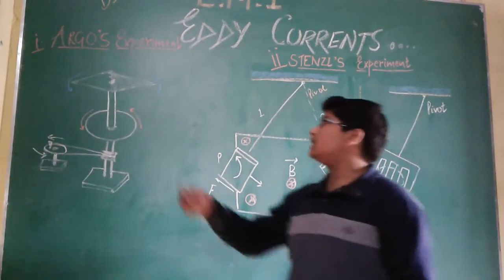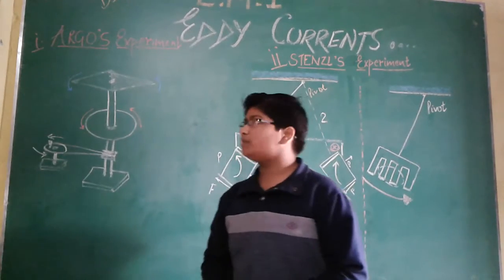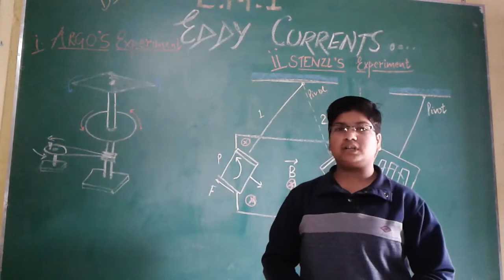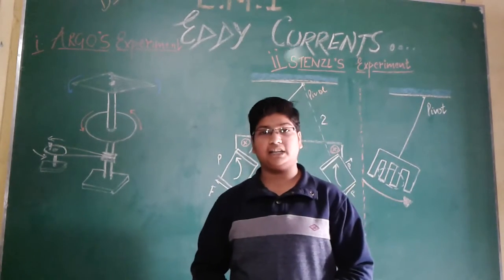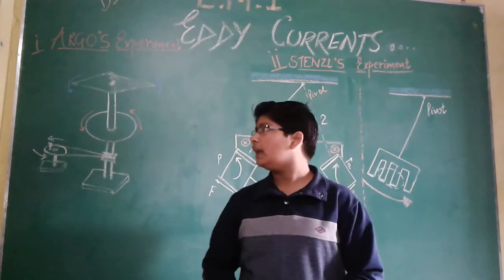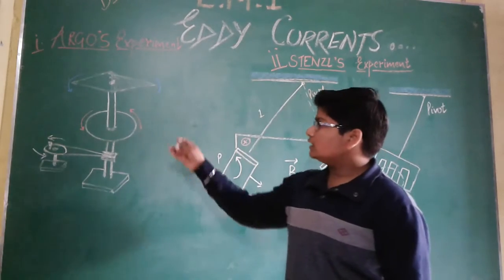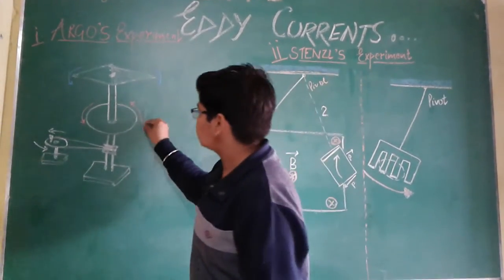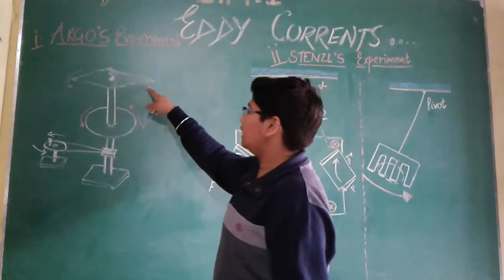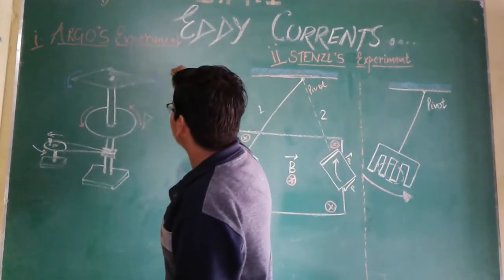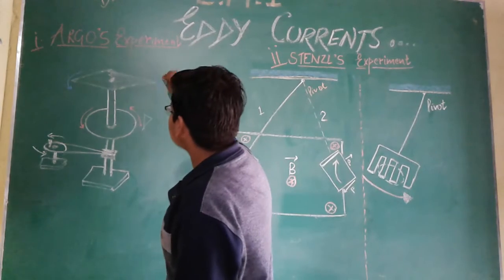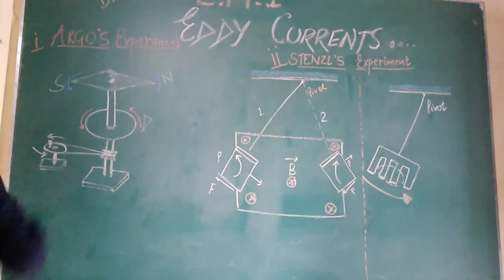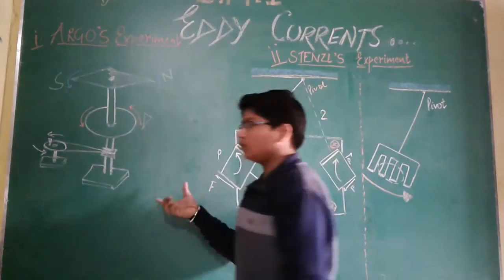Now let's come to Arago's experiment. This experiment was conducted in 1824, before the discovery of Faraday's laws of electromagnetic induction. Here we have the proper set up made by the scientist. This is the metallic disc D and this is the magnetic needle, with its north pole and south pole.